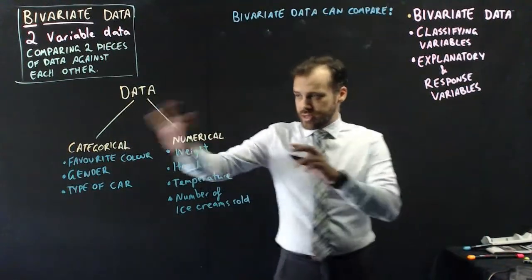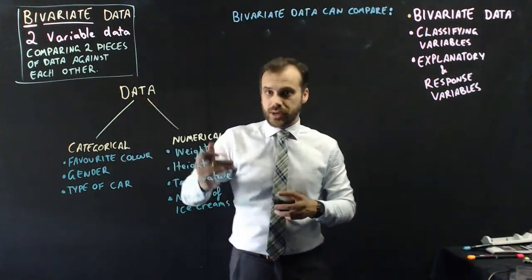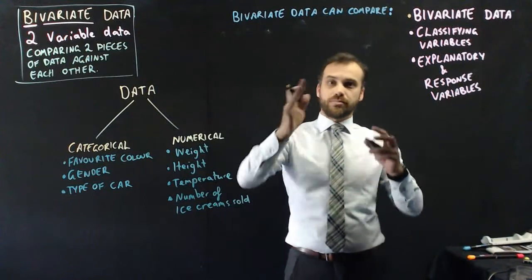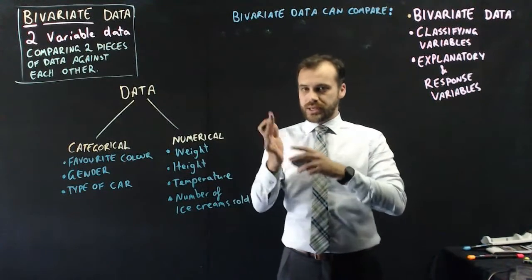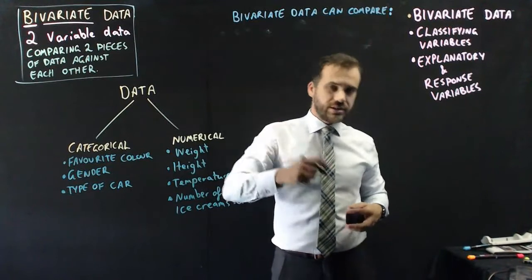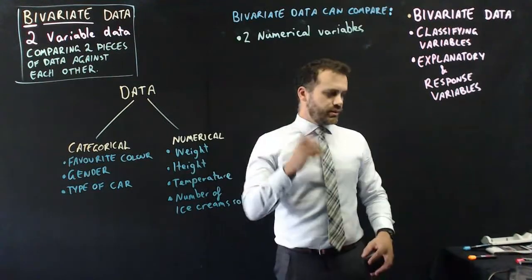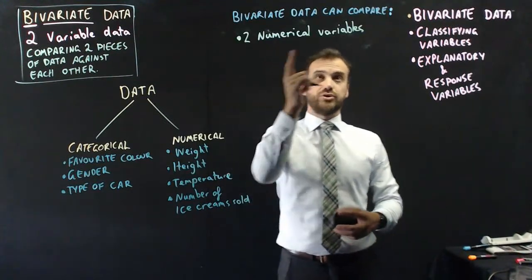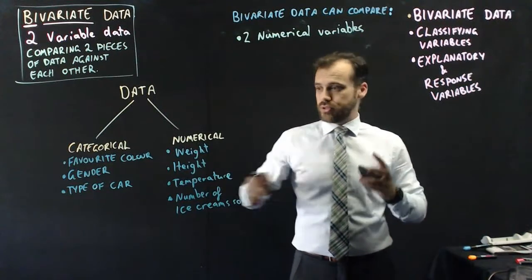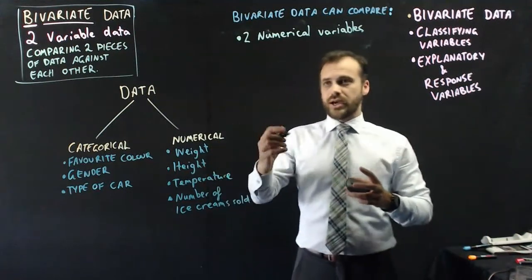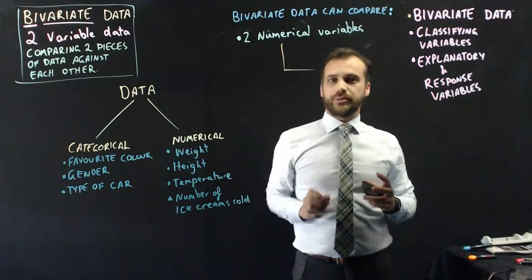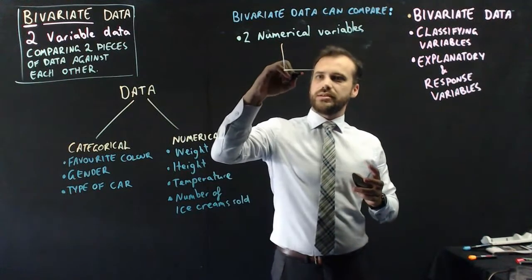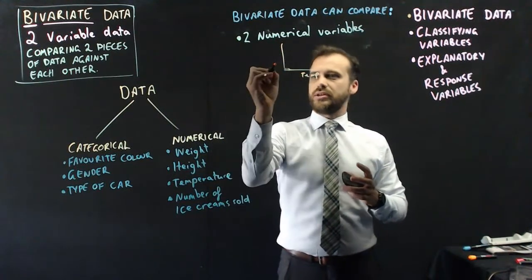Now it's important to understand that distinction between categorical and numerical. Because when you're dealing with bivariate, when you're comparing two pieces of data against each other, there are three different things that can happen. Now the first one is that you might compare two numerical variables. And you saw me do that with weight and height. And the way that I did it was creating a scatter plot.